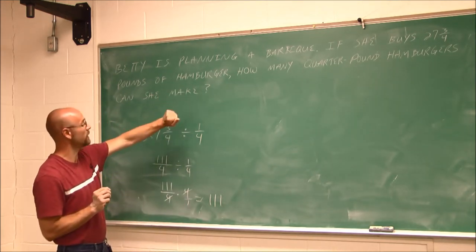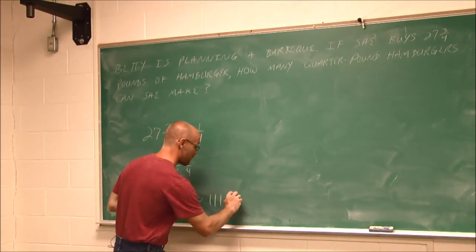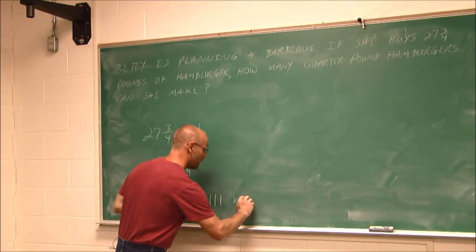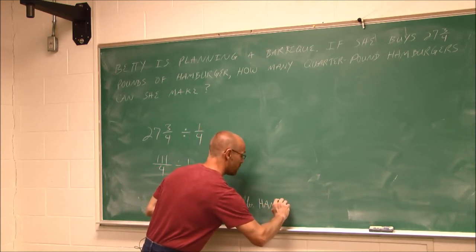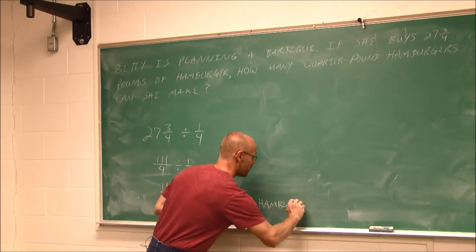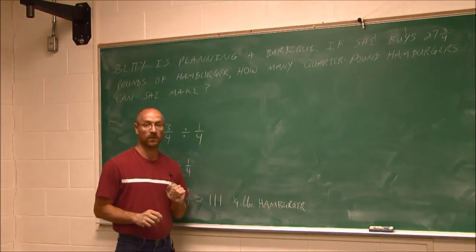We have to think. Application problems. What are we going to get 111 of? Hamburgers. Quarter pound hamburgers. Maybe we want - quarter pound hamburgers. We want to be very specific with this unit. 111 quarter pound hamburgers.